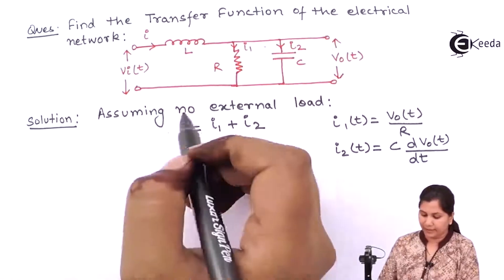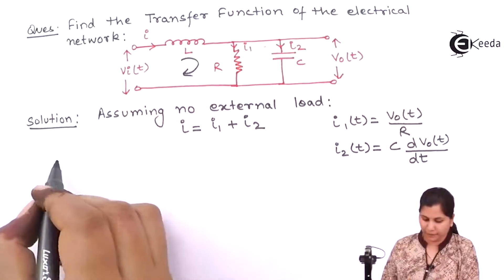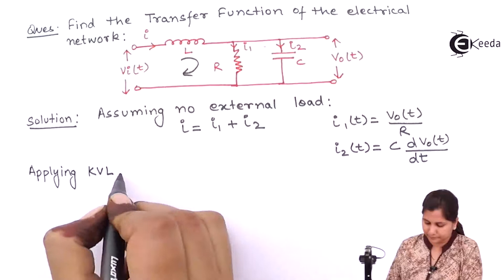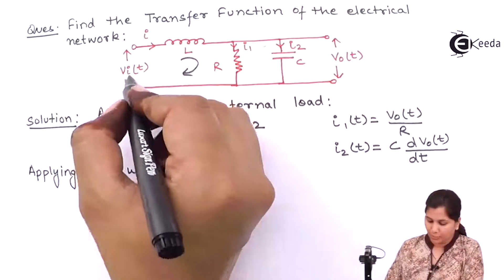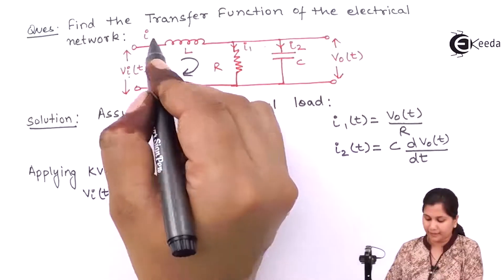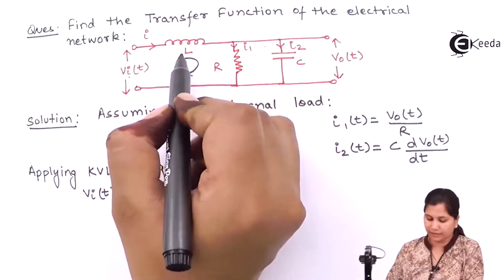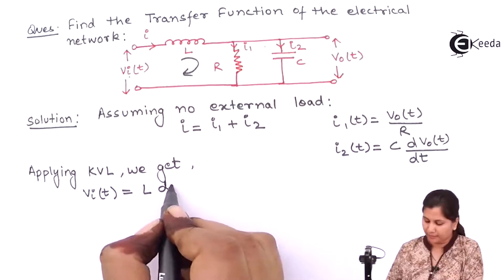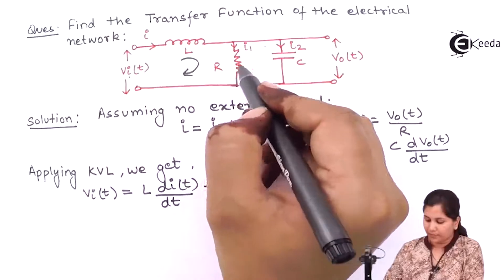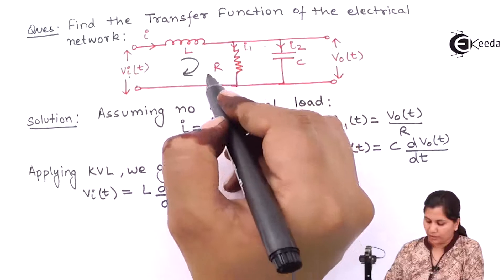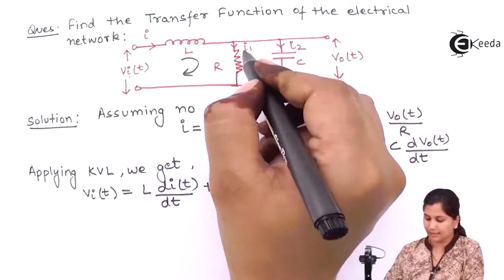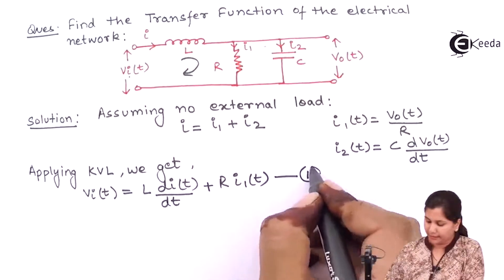Now apply KVL in this loop. We will get Vi(t). Because I is the current flowing across the inductor, it will be equal to L·di(t)/dt, plus the voltage across the resistance, which will be R·I1(t), because the current across the resistance is I1. Number this as the first equation.